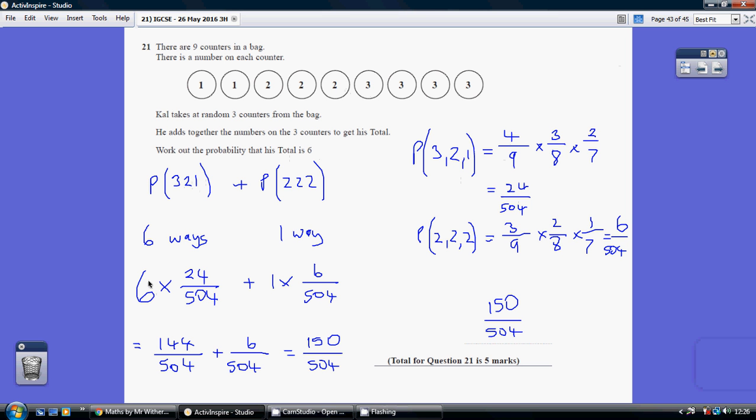So I've got 6 possible ways of getting the 3, 2, 1 combination. So I've times that one by 6. Yet there's only one way that I can get 2, 2, 2. Now what is the probability of 2, 2, 2?